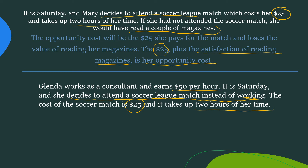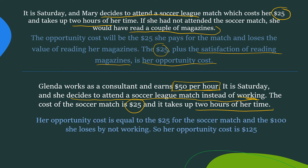Note that her soccer match takes up two hours of her time, and she earns $50 per hour. So don't forget to add $50 plus another $50 because it takes up two hours of her time. Her opportunity cost is equal to the $25 for the soccer match and the $100 she loses by not working. So her opportunity cost is $125.